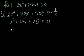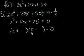And you might want to pause it and try it yourself. We're going to say (x + something)(x + something) = 0. And those two somethings, they should add up to 10. And when you multiply them, they should be 25.